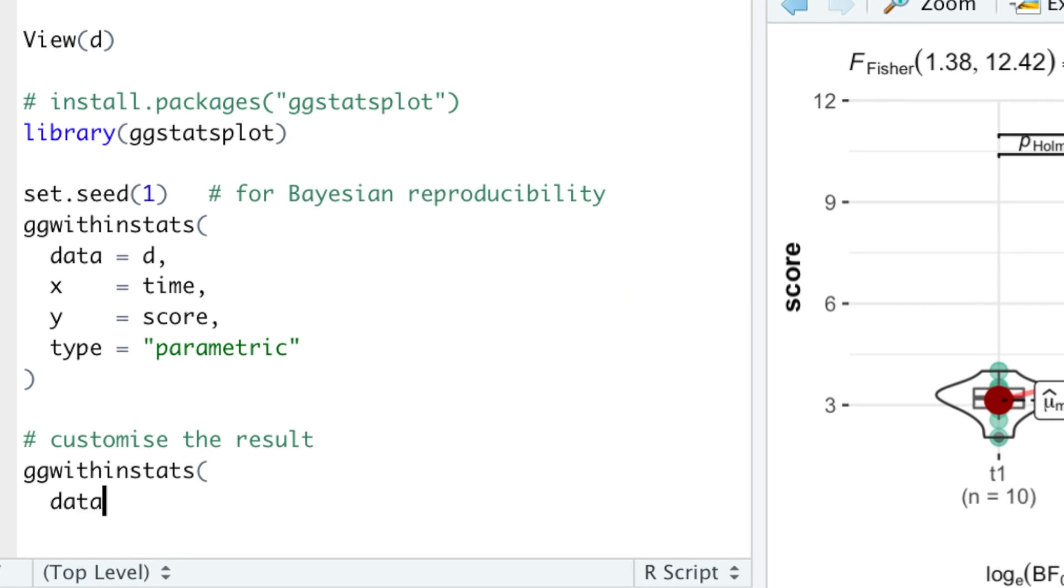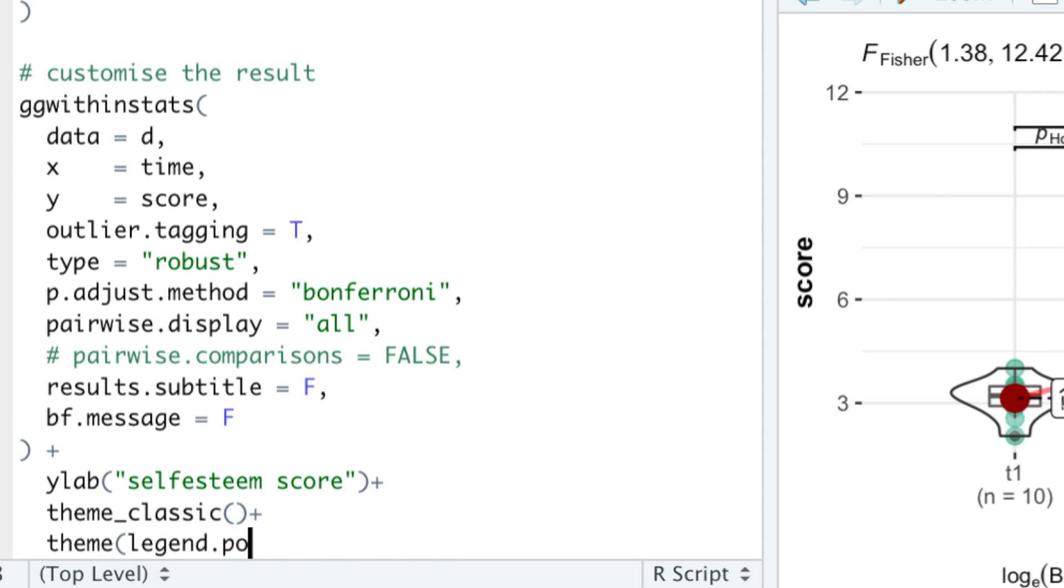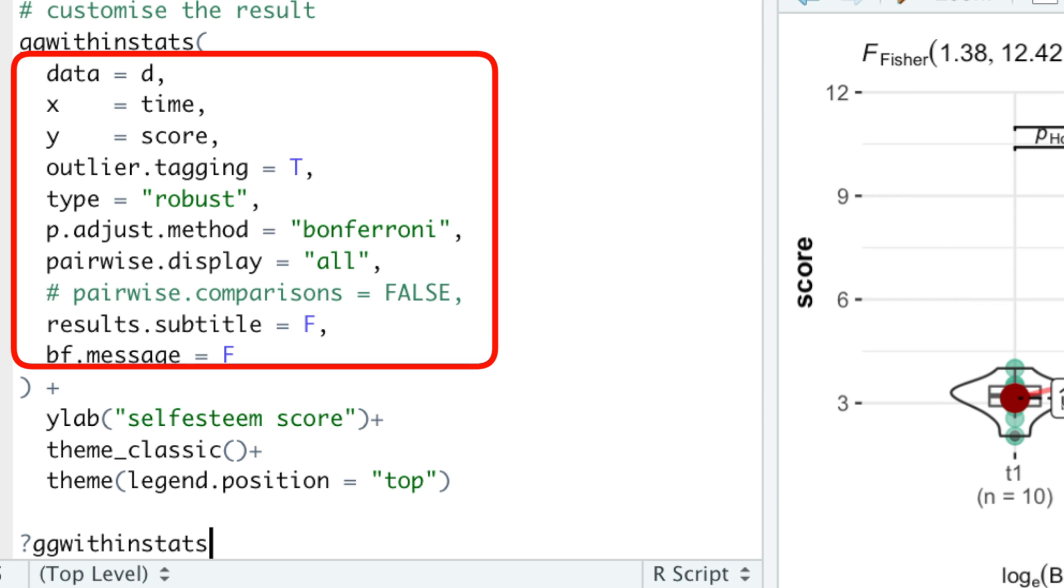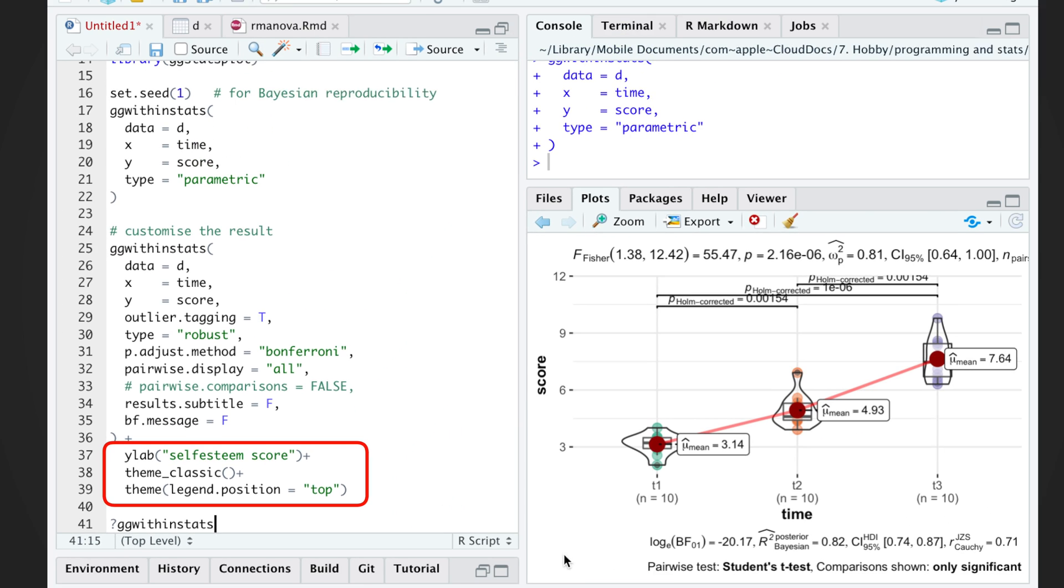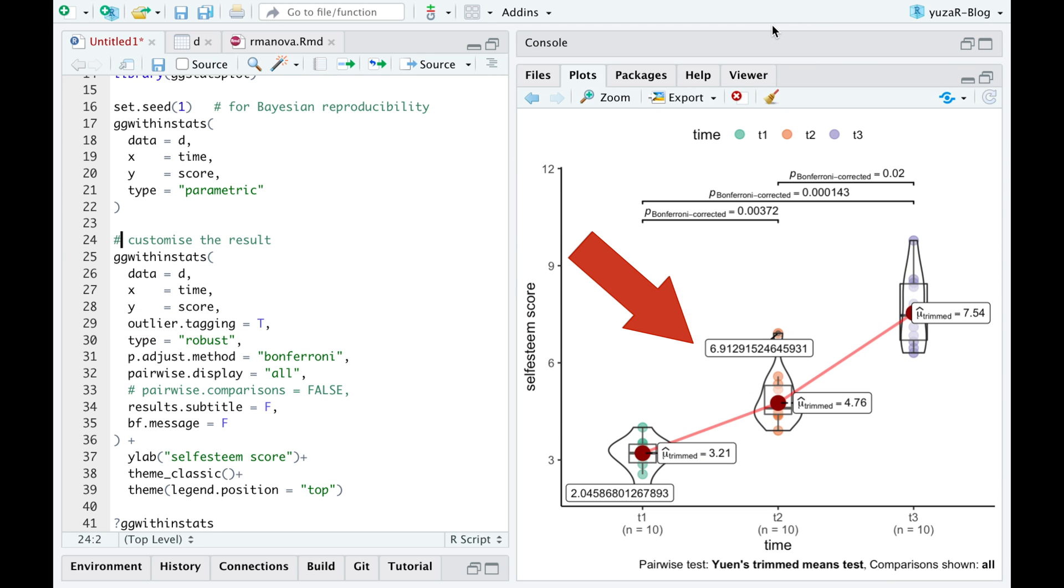However, if we want to, we can easily customize our plot by using either additional arguments within the function, or arguments from ggplot2 package outside of it. For example, if you found outliers in your data, you can display them on the plot and use a robust ANOVA to minimize the effect of outliers.